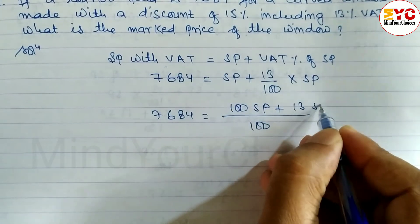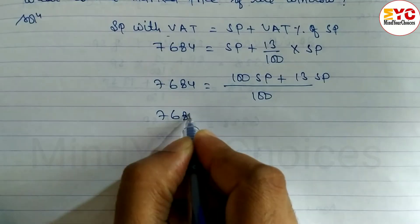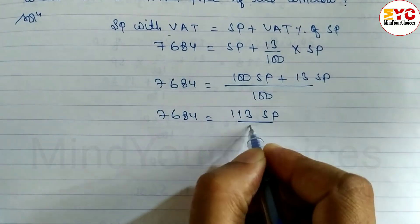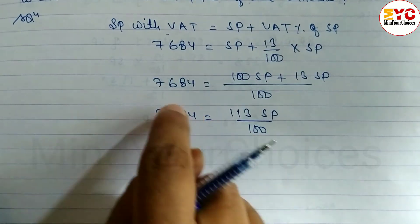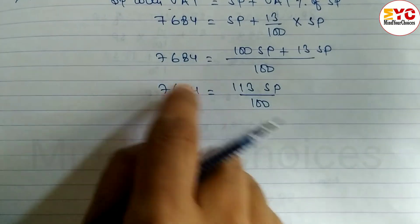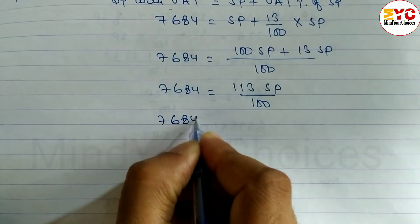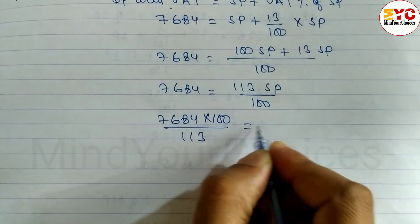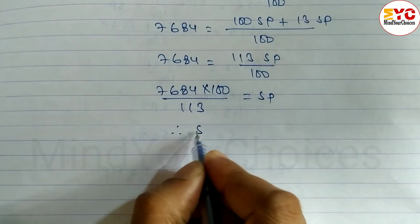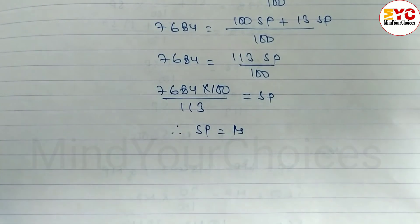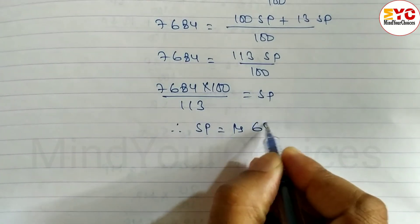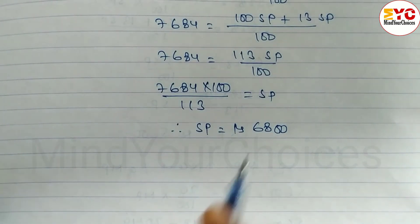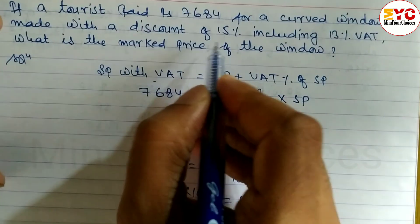Taking LCM of 100: 7,684 is equal to 100 SP plus 13 SP, which is 113 SP divided by 100. Cross multiply: 7,684 into 100 divided by 113 is equal to SP. Therefore the selling price is 6,800. So 6,800 is the value of selling price.